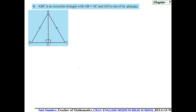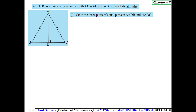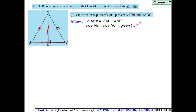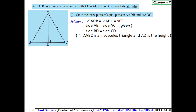Next question: triangle ABC is an isosceles triangle with AB equal to AC, and AD is one of its altitudes. State three pairs of equal parts in triangles ADB and ADC. We see that angle ADB equals angle ADC, side AB equals side AC as given, and side BD equals side CD.